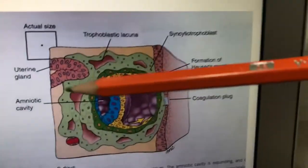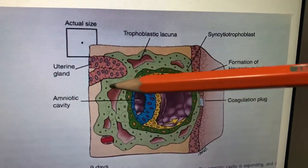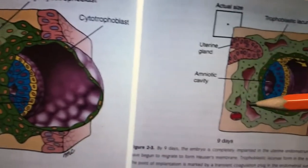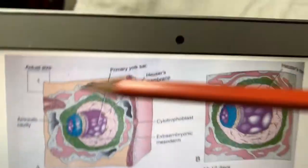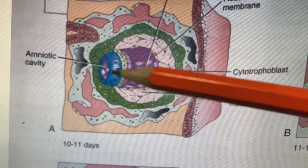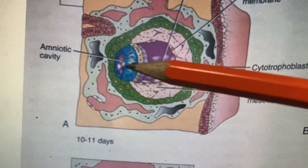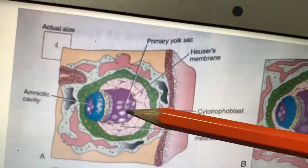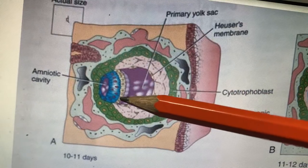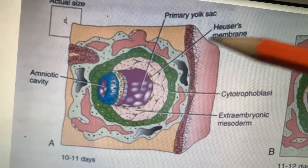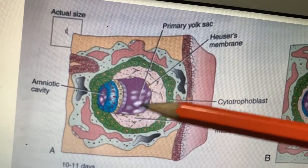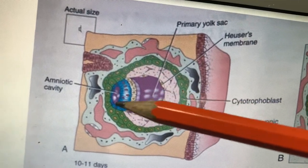Small spaces are formed in the syncytiotrophoblast — these are called lacunae, specifically trophoblastic lacunae. The uterine lining with its glands and blood vessels is nearby. In the embryoblast area there is a small cavity that is called the amniotic cavity. From the hypoblast, a few cells migrate and line this area — that is called Heuser's membrane.